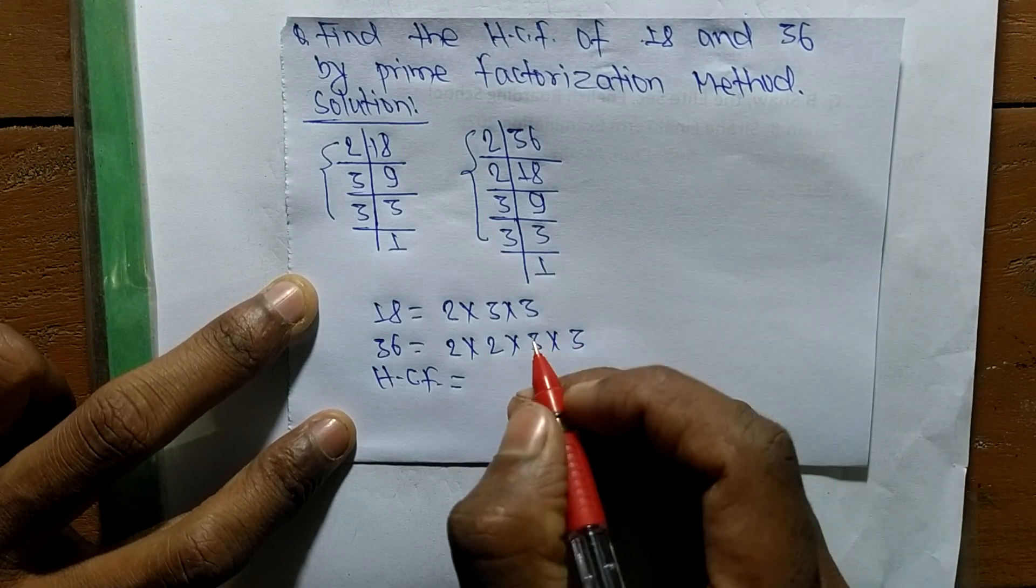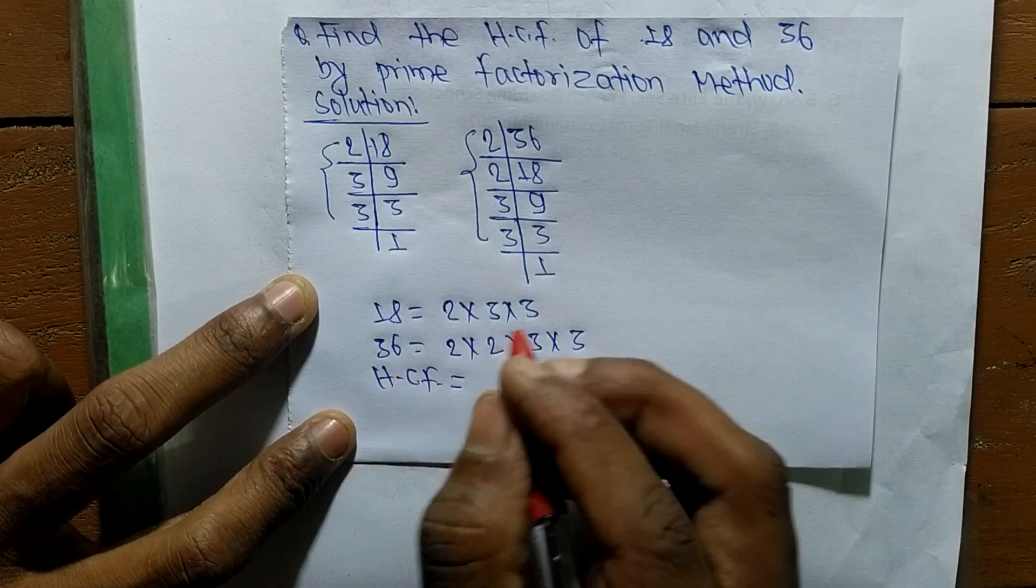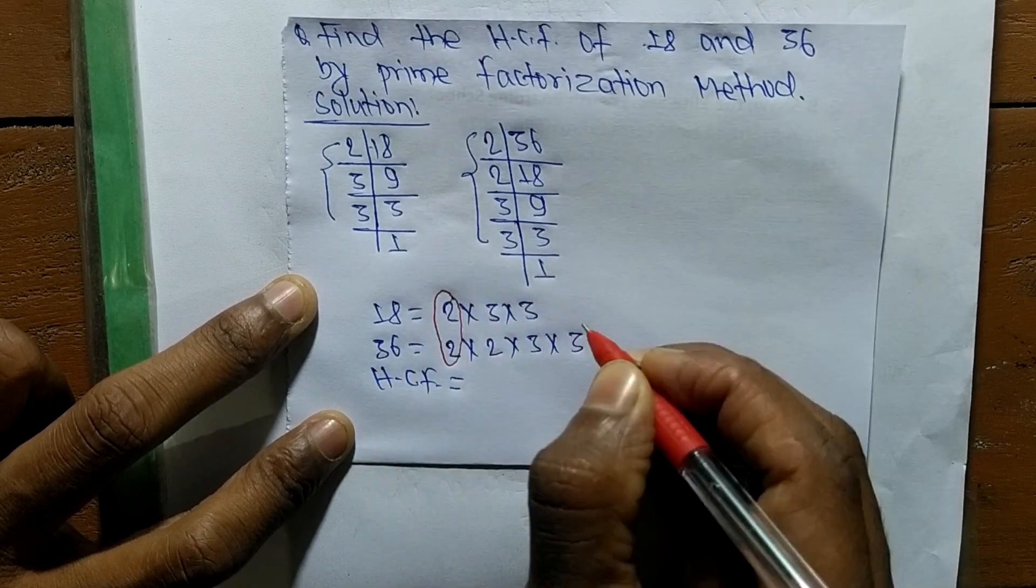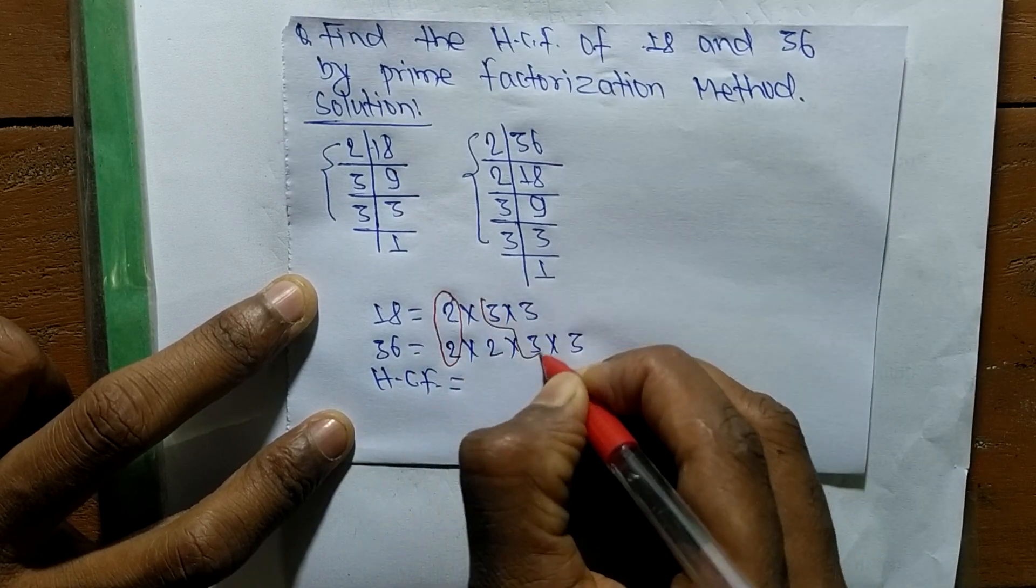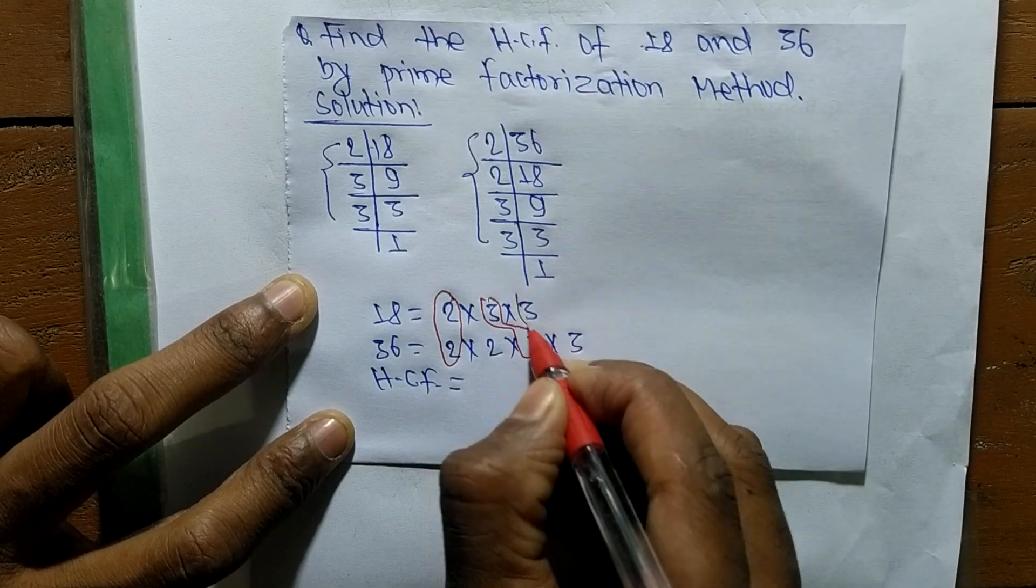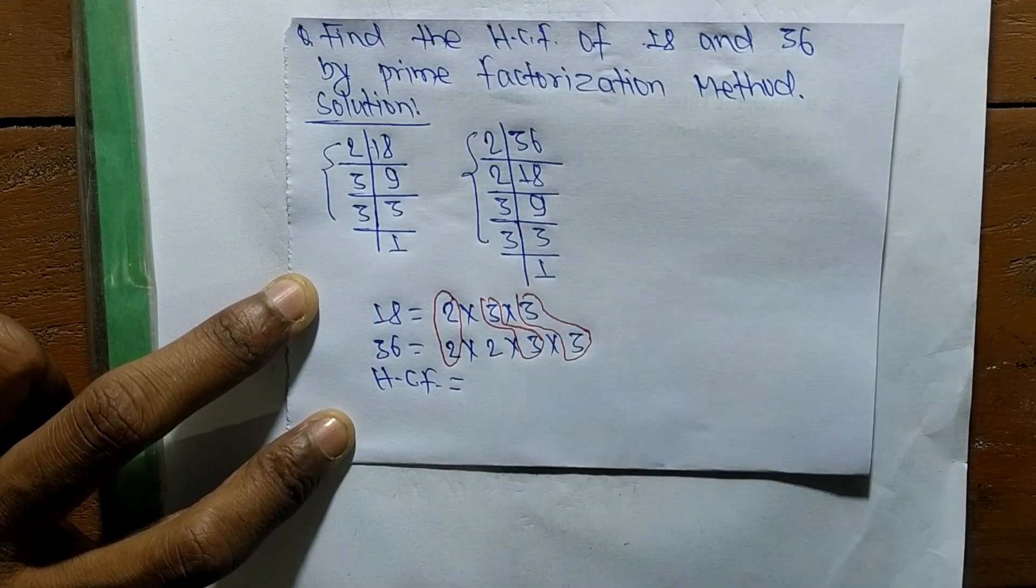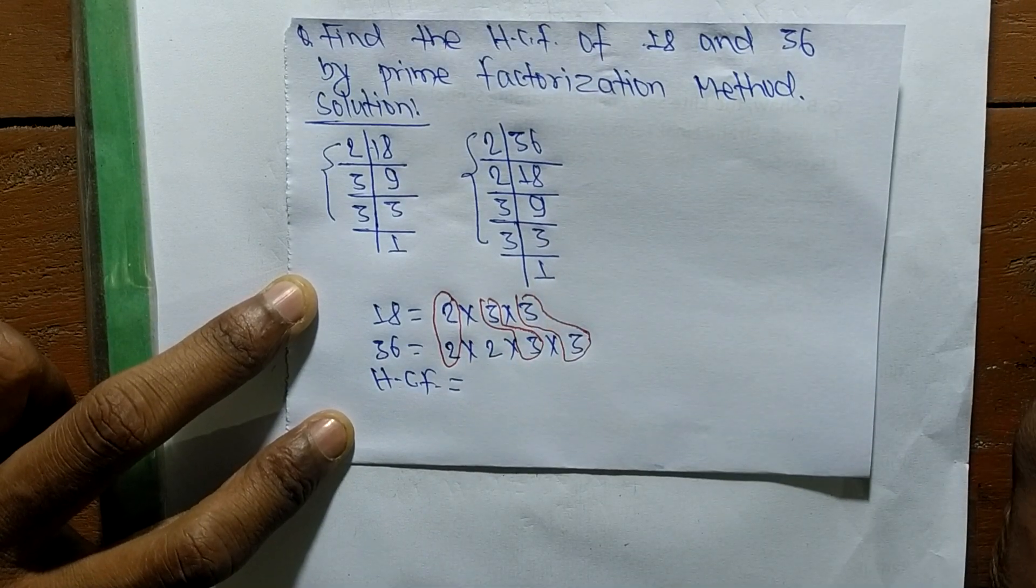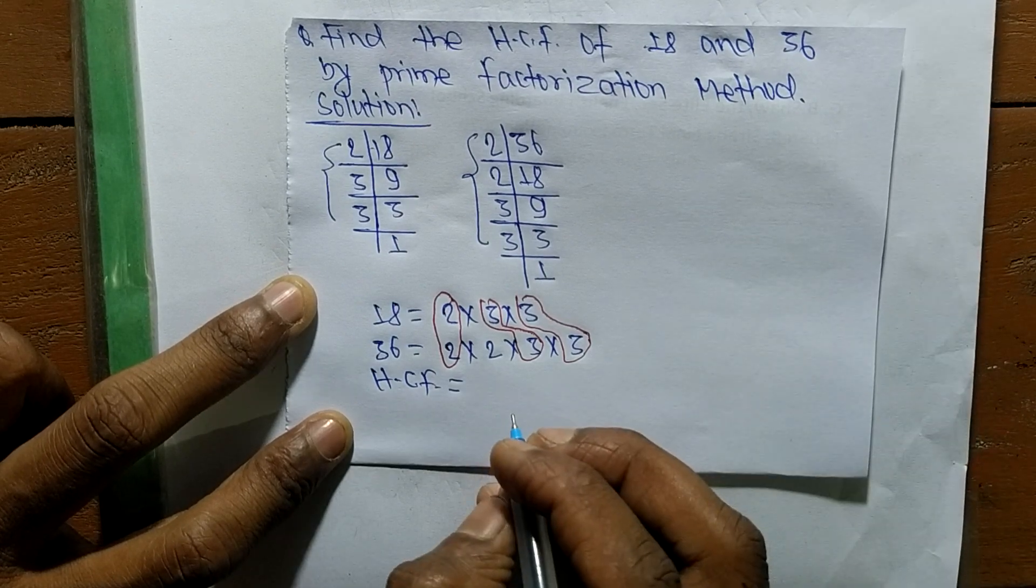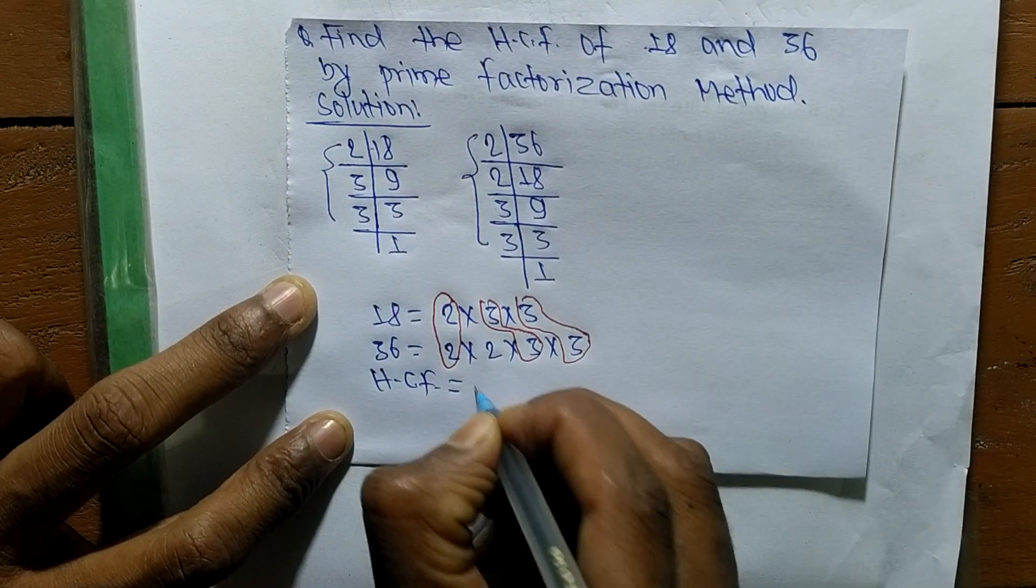The first common factor here is 2, second one is 3, and third one is also 3. So HCF is the product of all the common factors, and they are 2 times 3 times 3.